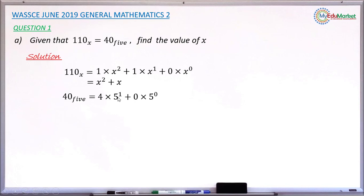So 5 raised to 1 is 5 times 4, that gives 20. 5 raised to 0 is 1 times 0 gives 0. So in the end, you have 20. So 20 in base 10 is the same thing as 40 in base 5.